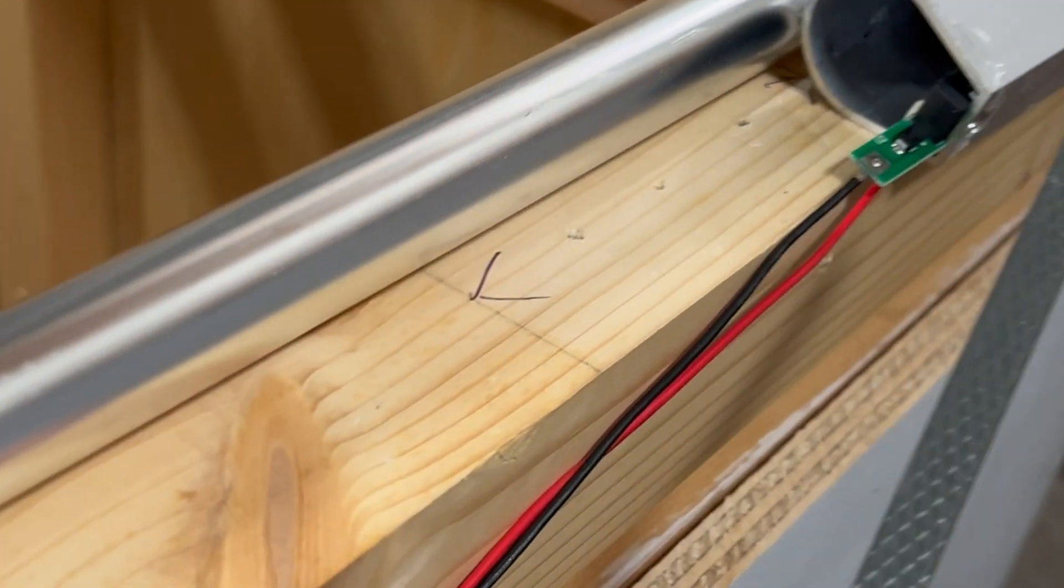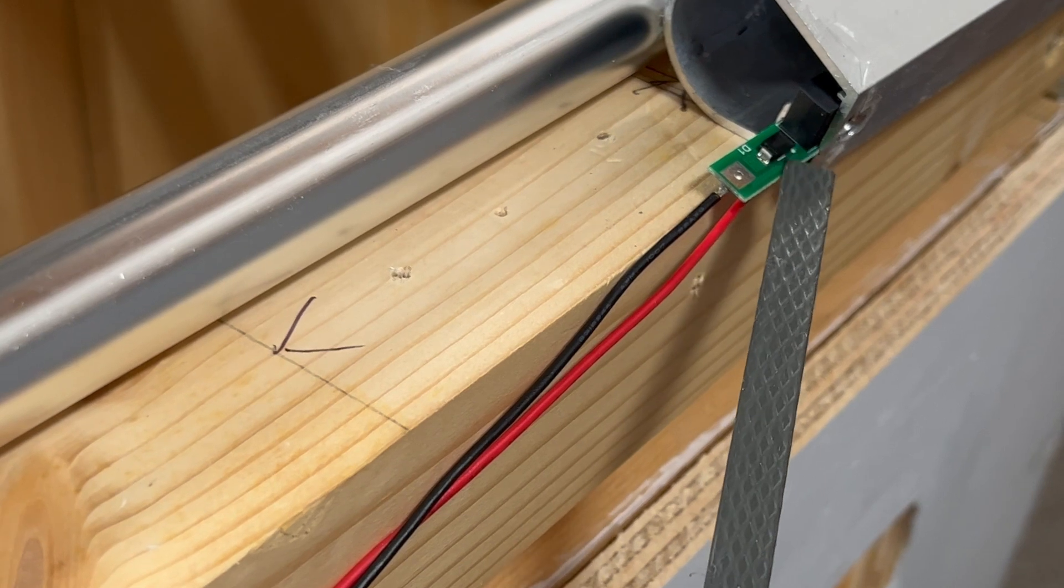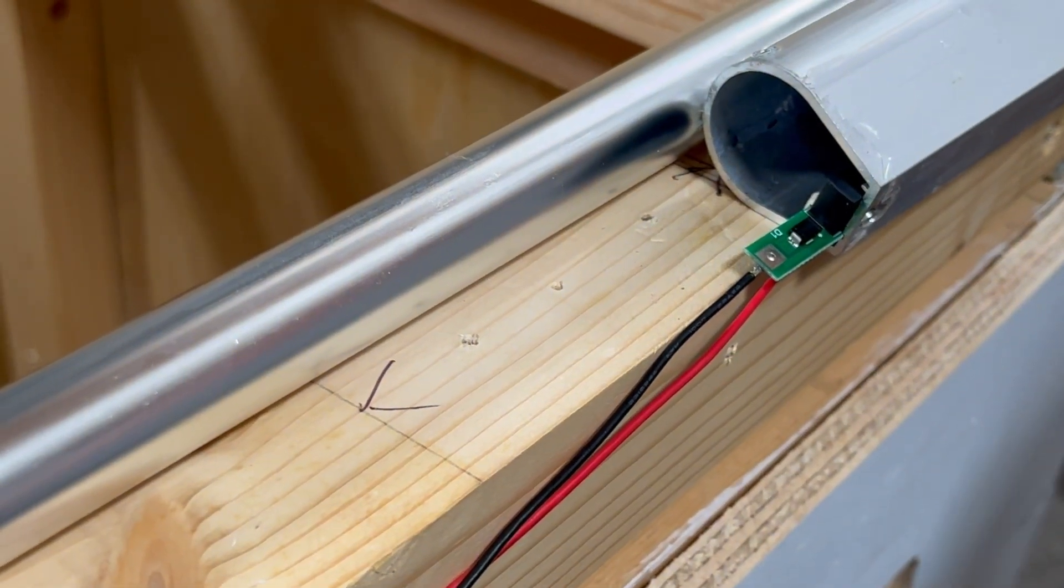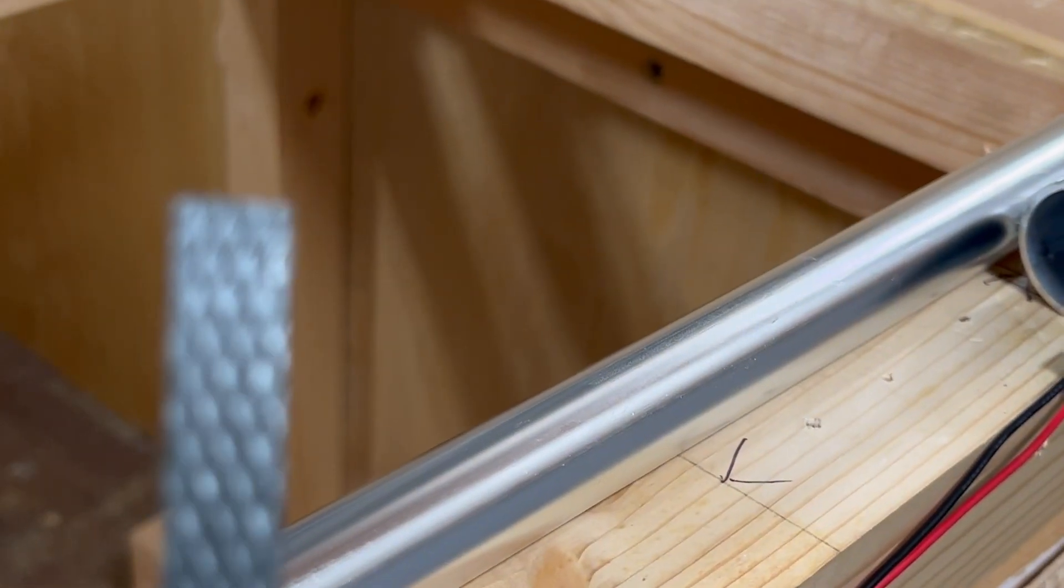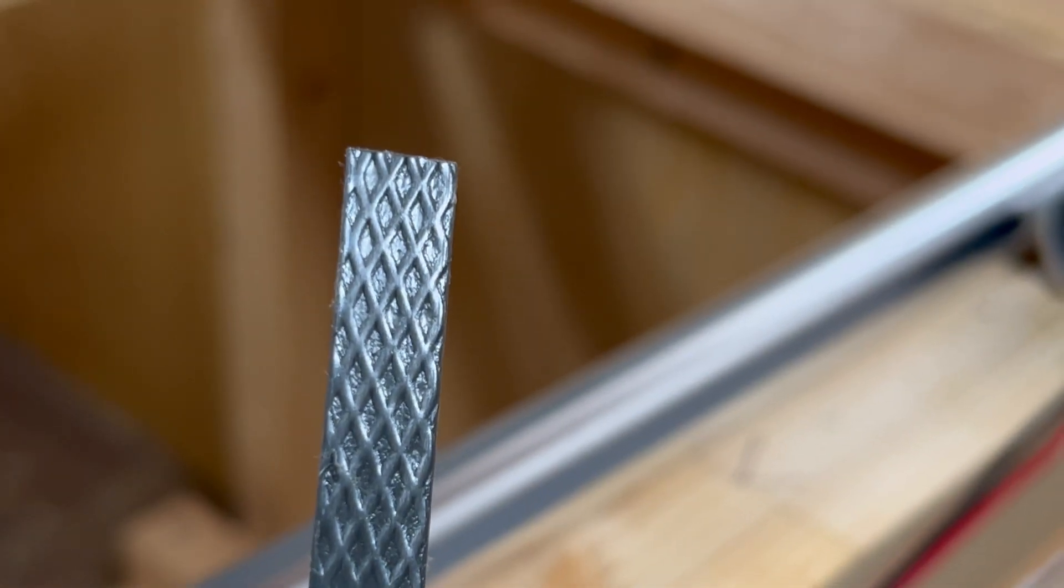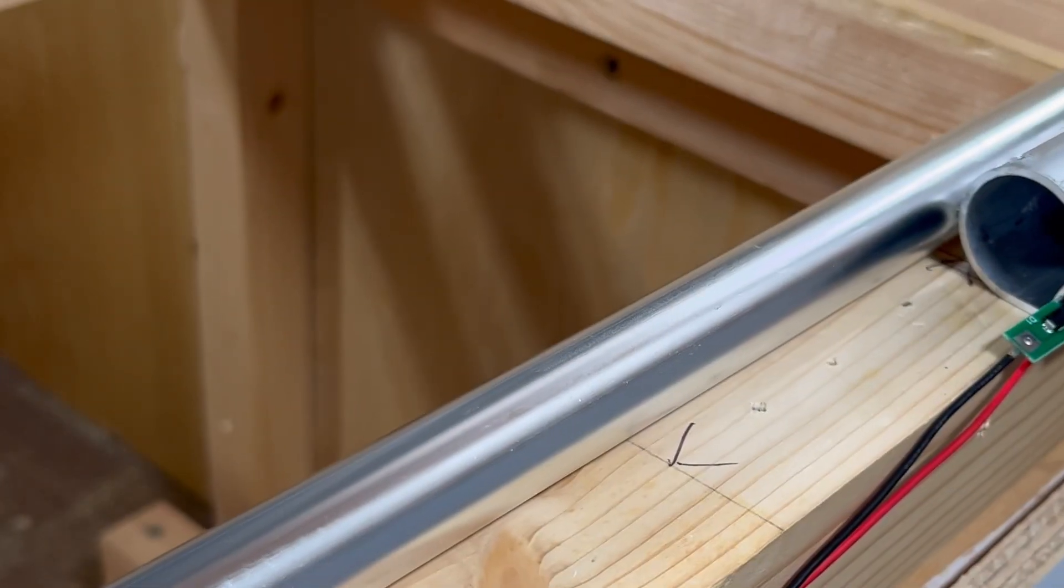Now you might ask what's stopping this limiter switch from extending too far. Well, when I cut this off I will put a piece of this in the tube first, making it not travel along the tube and breaking the wire.